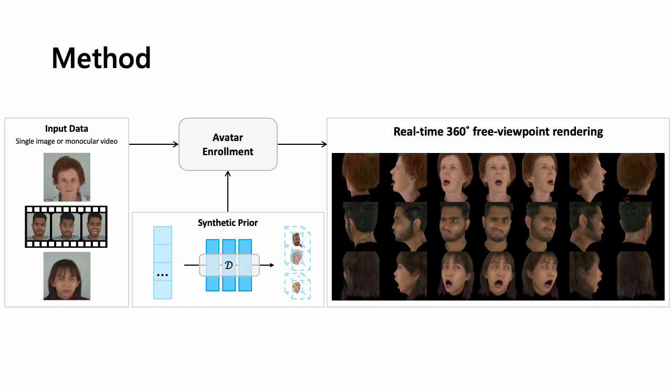To address this issue, we propose using a generative prior trained over many people to produce Gaussian avatar parameters. This trained prior can then be used to fill in the gaps left by missing data in the single-camera user enrollment, for example, at the sides and back of the head.